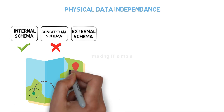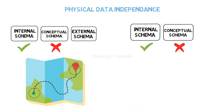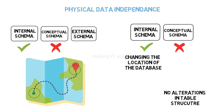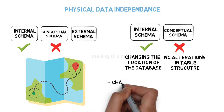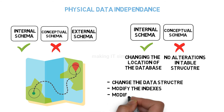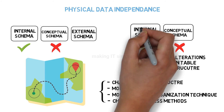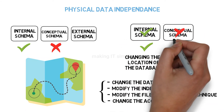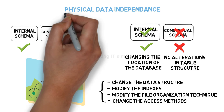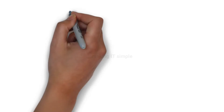For example, if we move the database from one location to another, that is a change at the physical level, but it does not mean we make changes at the conceptual schema — the tables in it do not get modified. Similarly, if we change the data structure, modify the indexes, modify the file organization technique, or change the access methods, these are all changes at the physical level. With physical data independence, we don't require changes at the conceptual level.